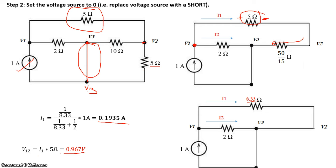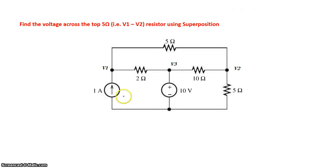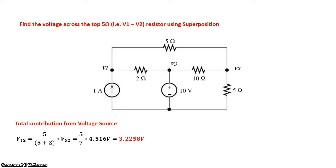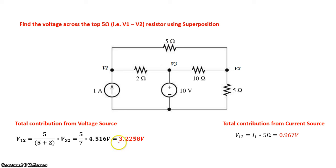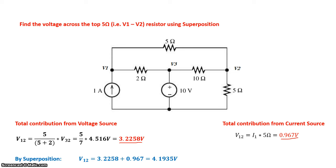On this original circuit, the voltage contribution from the voltage source is 3.2258 volts, and the voltage contribution from the current source is 0.967 volts. By superposition, the total voltage across the 5 ohm resistor equals 3.2258 plus 0.967, which gives 4.1935 volts, or approximately 4.2 volts. That is the total voltage drop between V1 and V2 — 4.2 volts total. That's the concept of superposition.